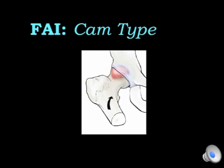If you imagine the hip as a ball and socket joint and the hip flexing up and the bump engaging into the socket and causing damage there, this is the essence of cam type impingement.